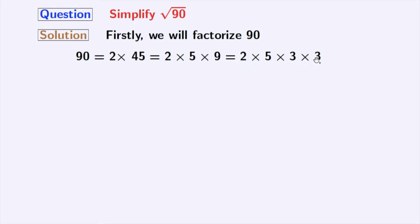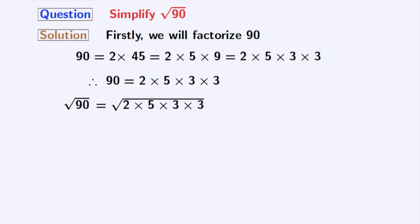So, we will not factorize further. Finally, we get 90 is equal to 2 times 5 times 3 times 3. Now, taking square root on both sides, we get square root of 90 is equal to square root of 2 times 5 times 3 times 3.